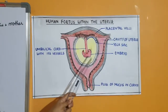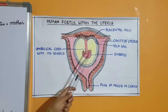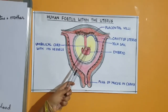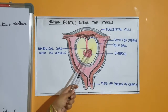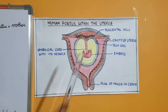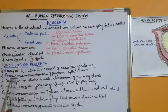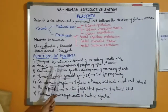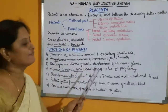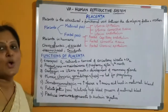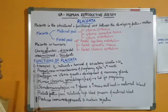The placenta is connected with the embryo by means of the umbilical cord, which helps in the transport of substances to and from the embryo. The placenta also secretes the hormone progesterone, which helps in the maintenance of pregnancy after the fourth month when the corpus luteum starts degenerating.